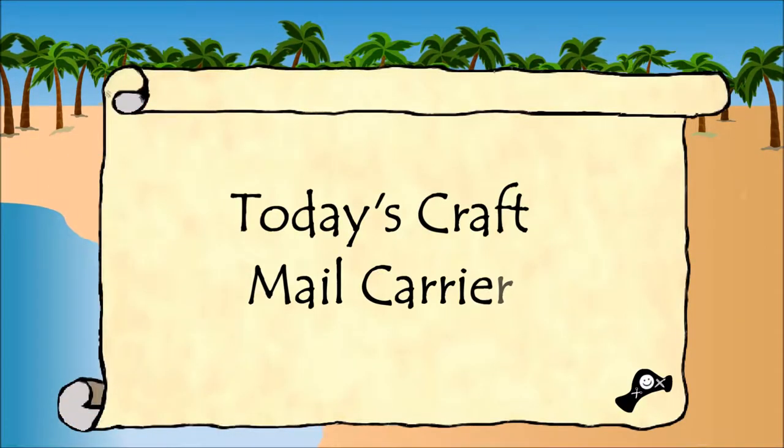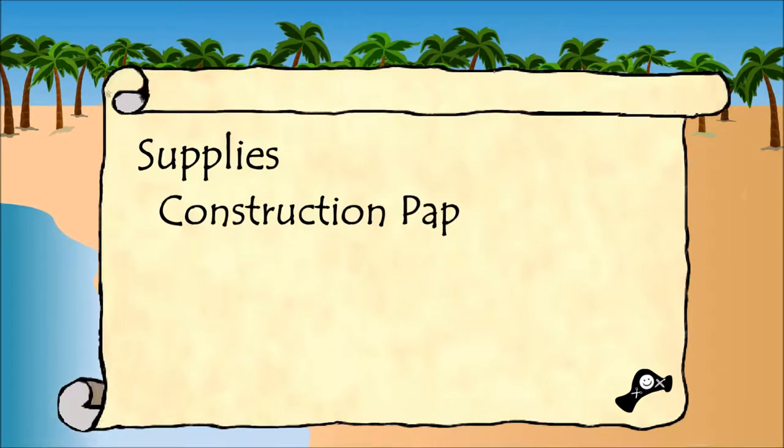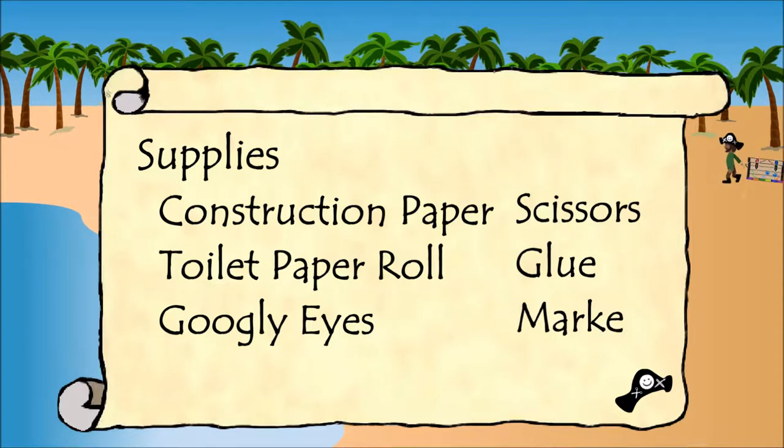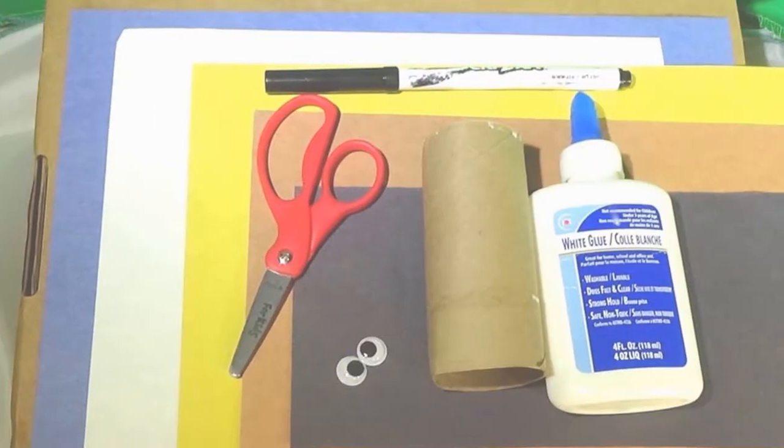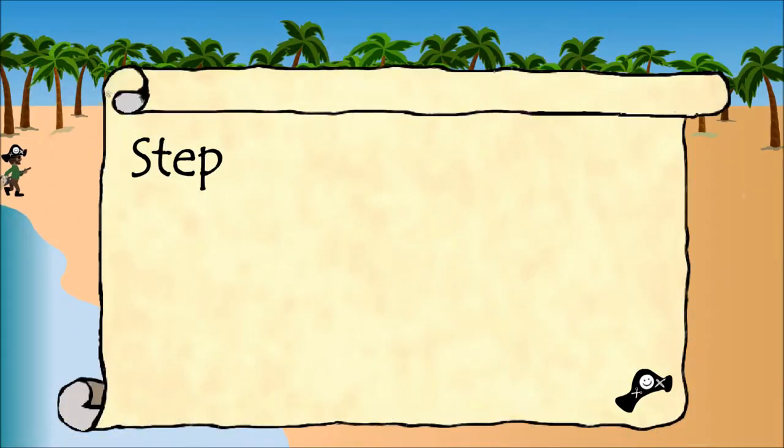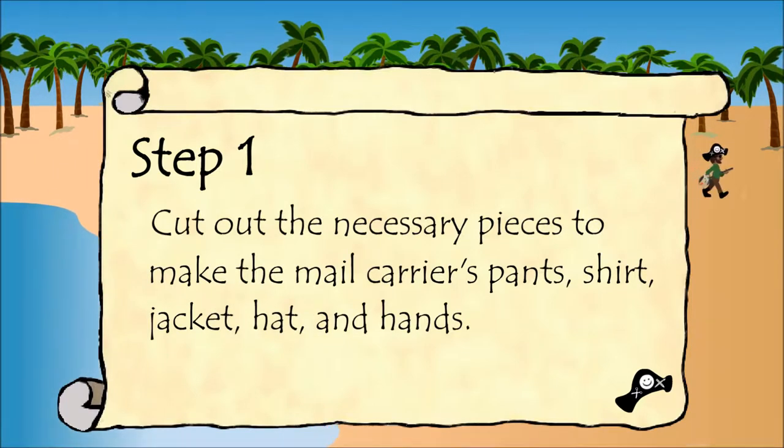Today's craft: mail carrier. Supplies: construction paper, toilet paper roll, googly eyes, scissors, glue, and marker. Step one: cut out the necessary pieces to make the mail carrier's pants, shirt, jacket, hat, and hands.